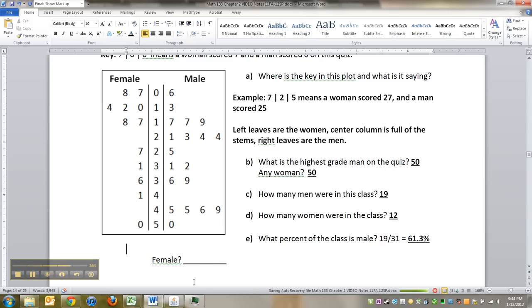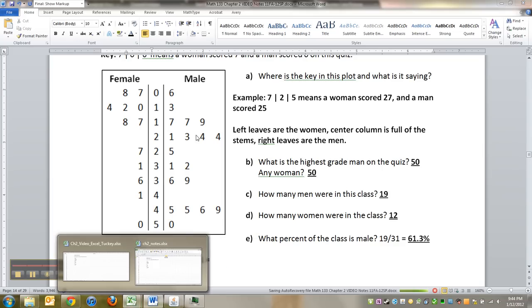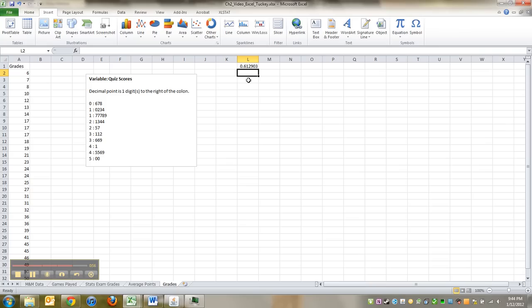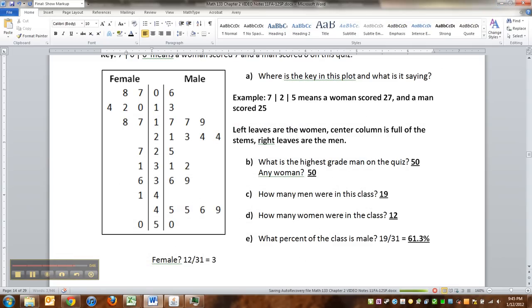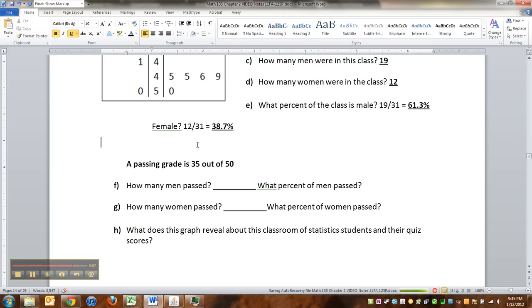What percent was female? Well, you can do it by either 12 out of 31, or you know it's got to add up to 100%. So you can take 100 minus the 61.3 or whatever. Oops, I just did that wrong. I did 12 divided by 19. I meant 31. There we go. So it's 38.7%. Notice those two percentages add up to 100%, right?